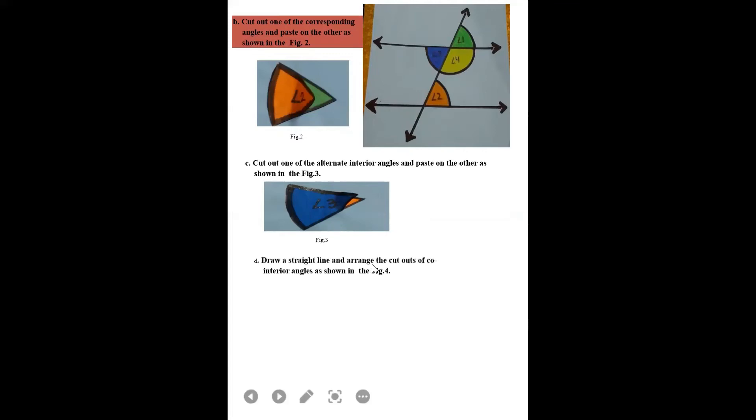Then, draw a straight line and arrange the cutouts of co-interior angles as shown in this figure. Co-interior angles if you check in the given figure, the first figure that is angle 2 and angle 4. If you will just put it, it would give you a straight angle that is 180 degrees. Now, the cutouts which you had made in figure two, figure three, figure four and the previous figure.